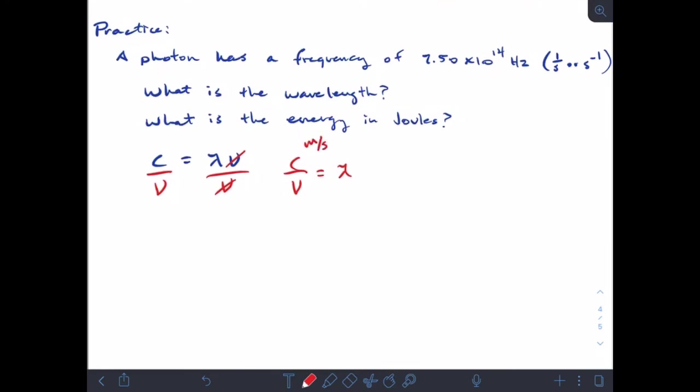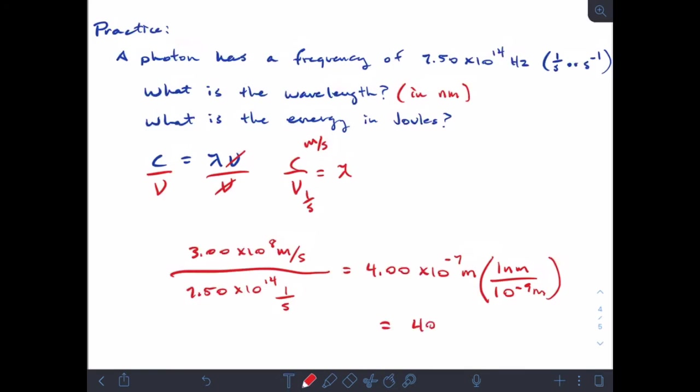This time I don't have to do any converting because all my units match - I have meters per second on top and one over seconds on the bottom. Seconds and seconds go together, no worries there. So I'll have 3.00 times 10 to the 8 meters per second divided by 7.50 times 10 to the 14 inverse seconds, and that gives me an answer of 4.00 times 10 to the minus 7 meters. And let's say if my question was more specific and said what is the wavelength in nanometers, now I've got it in meters so I'm going to convert it to nanometers. 1 nanometer is 10 to the minus 9 meters, so this comes out to be 400 nanometers.